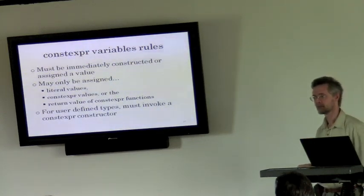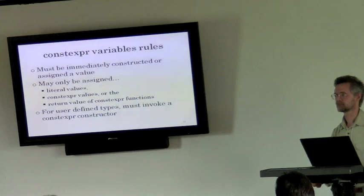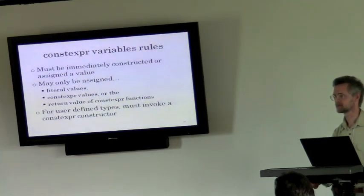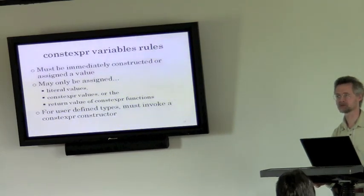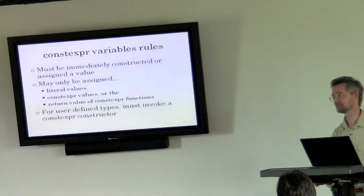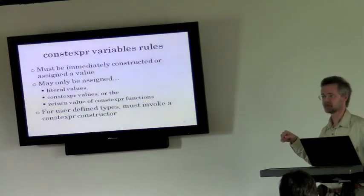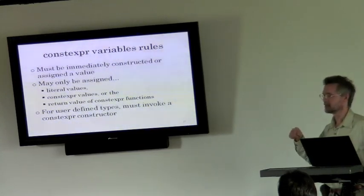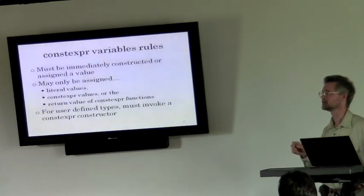You can have constexpr variables and constexpr functions. A constexpr variable has to be immediately constructed or assigned by literal values, constexpr values, or the return value from a constexpr function. Basically we're talking about things the compiler knows about — you're building stuff the compiler knows at compile time. If you've got a user-defined type you're declaring constexpr, it has to have a constexpr constructor.